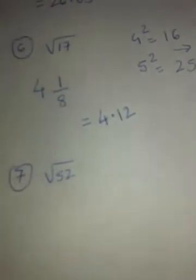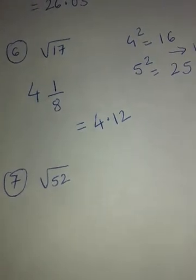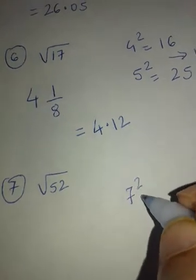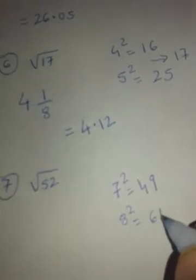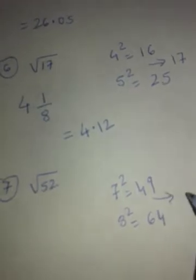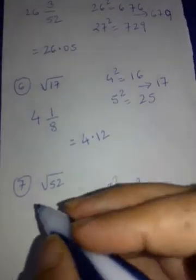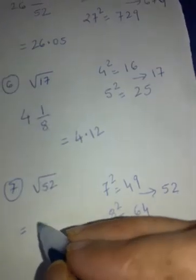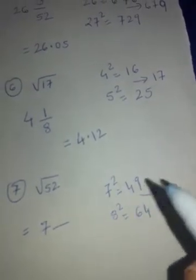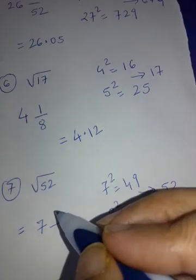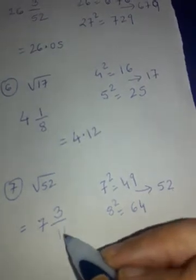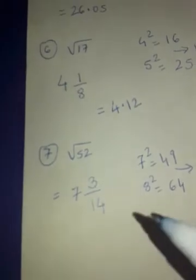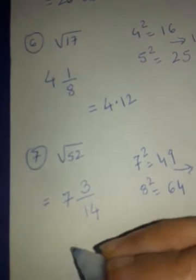Square root of 52. Now I am not referring to chart. You only tell me 52 lies between which two squares. Very good. 7 square is 49. 8 square is 64. And 52 lies somewhere here. So the square root is going to be 7 plus something. 7. Difference between 49 and 52 is 3.